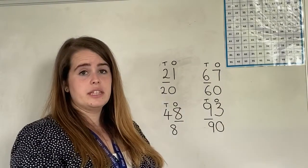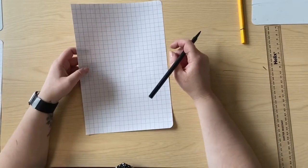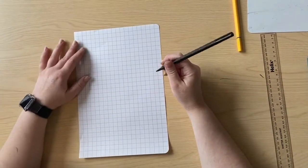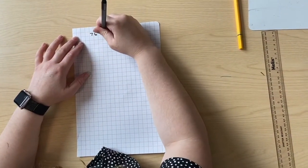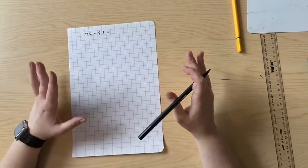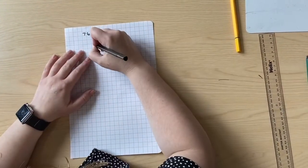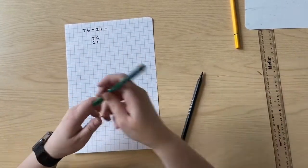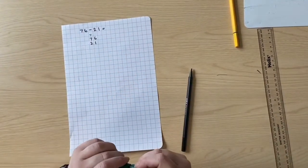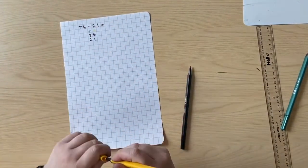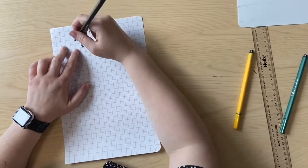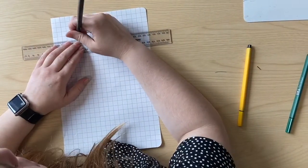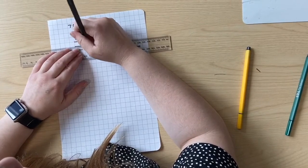We're now going to use our place value skills to help us do some column subtraction. For today's lesson you're going to use some paper and a pencil. We're going to start with the question 76 take away 21. It's exactly the same as column addition — we have to make sure all the numbers are lined up so they are in the right place value column, with tens and ones correctly aligned. Instead of an addition symbol, we're going to use a subtraction symbol, and then draw two lines underneath for our equals sign.